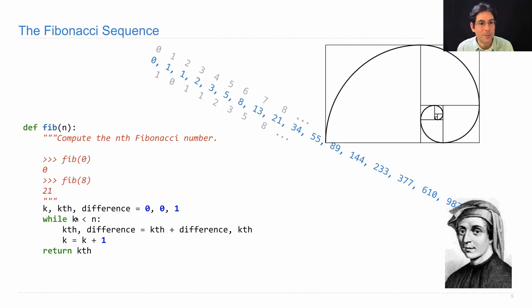Here this stores the recurrence that I told you about. The difference is always the previous Fibonacci number, and so the next one is the sum of the current one and the previous one. Then we increase k in order to keep track of where we are. This implementation will return each of these Fibonacci numbers given each of these indices.